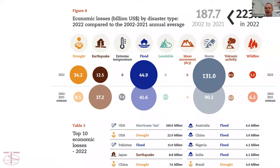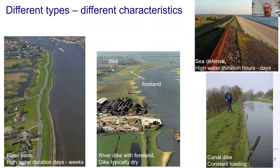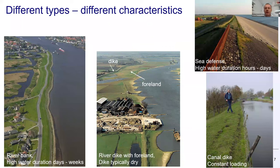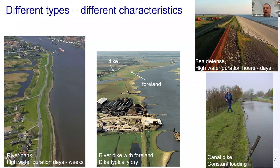Now we take the step to dikes and levees - one of the ways to protect ourselves from floods. We already see the variability: on the left, a river bank where high water typically comes once a year for a week or two. At the center, a dike constructed at some distance from the channel, typically dry except for extreme conditions. On the top right, a sea defense offering protection against storm surges lasting 24 to 48 hours, where wave impact is very important.